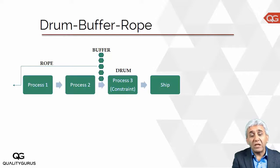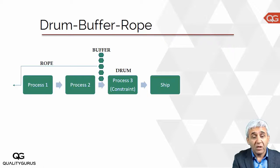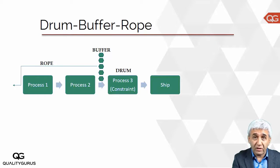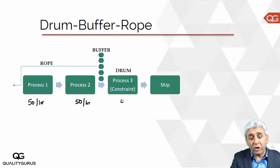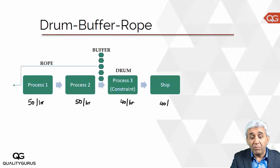Here we have three processes — process one, process two, process three — and then process four is shipping. In this case, process three is the constraint. Process one produces 50 pieces per hour, process two produces 50 per hour, process three makes 40 pieces per hour, and so all we can ship is 40 pieces per hour.